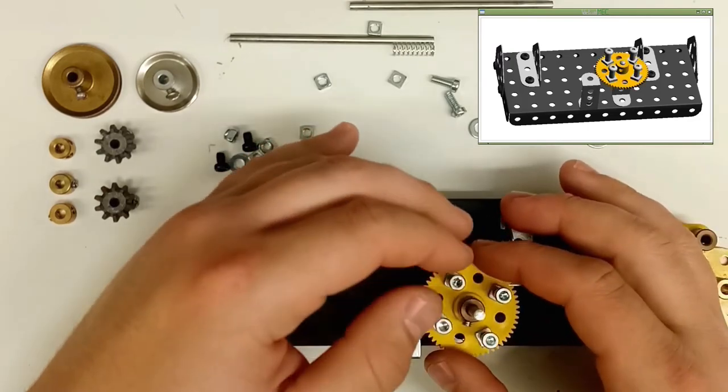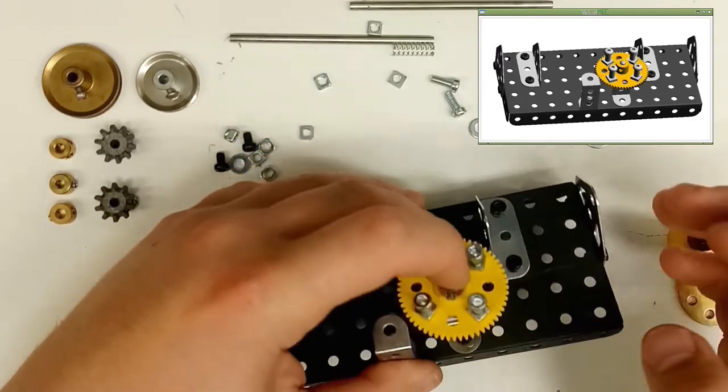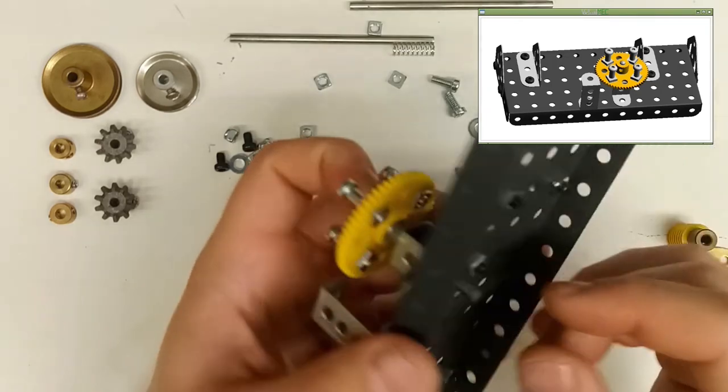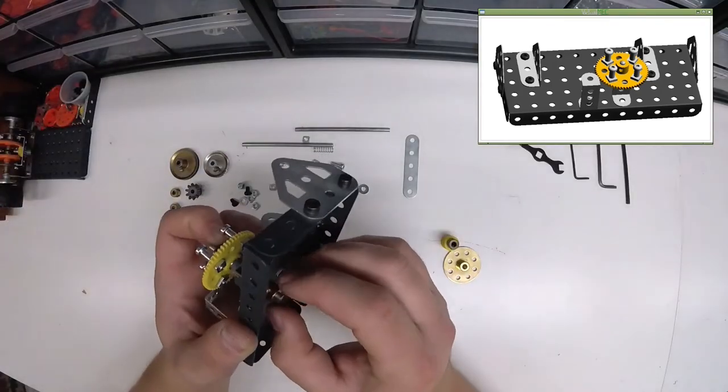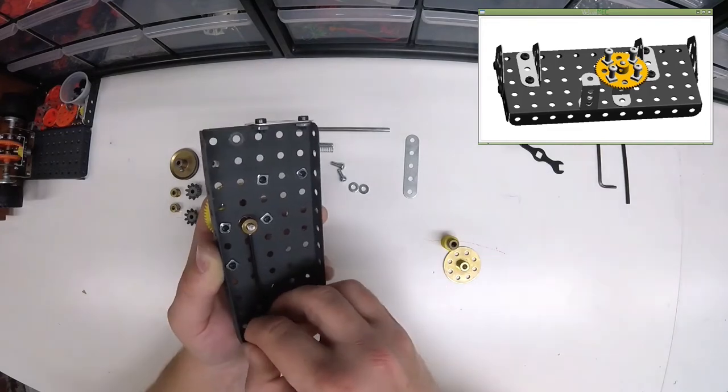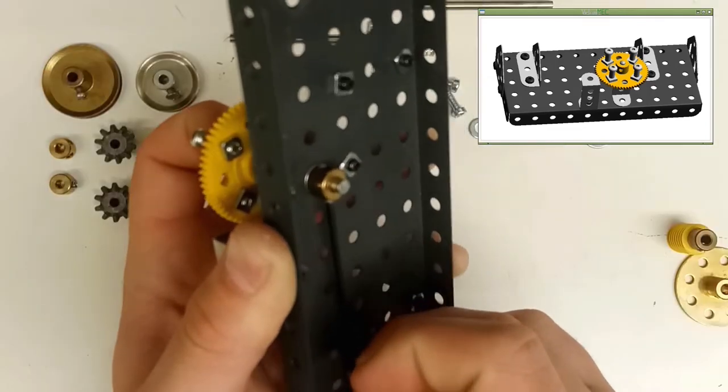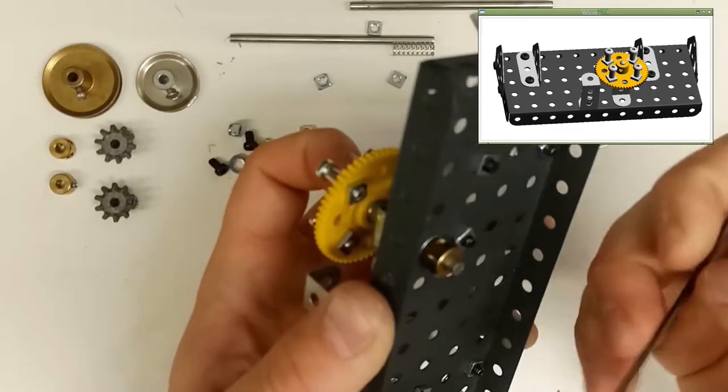And this is where I modified Ricky's design slightly. You can see on the bottom here I'm just going to put a boss. His design has another little piece here but I took that out because I wanted it to fit on the table, and it still works just as good.